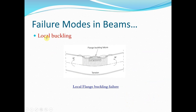The next failure mode is local buckling. When a beam is subjected to very heavy loads, the bending moment on the beam section increases, causing the top flanges of an I-section to buckle in the form of waves. The top portion is subjected to heavy compression, which causes local buckling of the flanges. The bottom portion is subjected to tension. This is called local flange buckling failure.